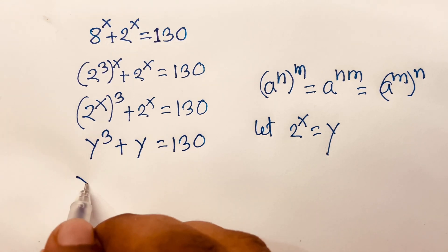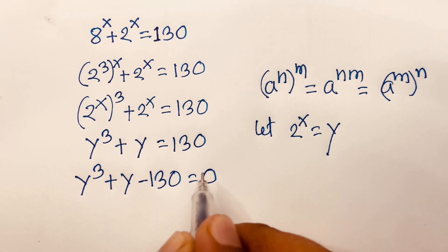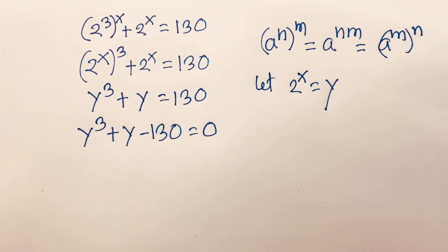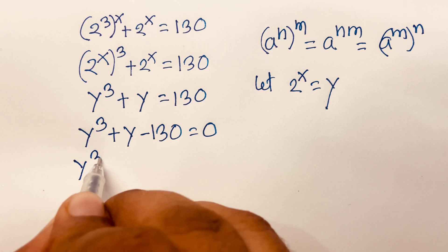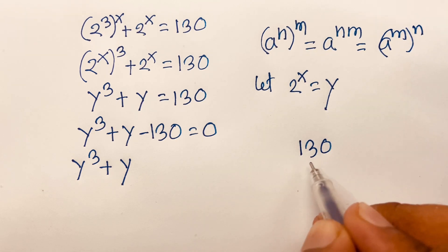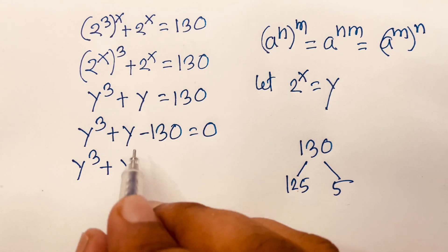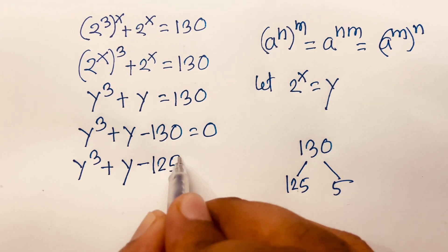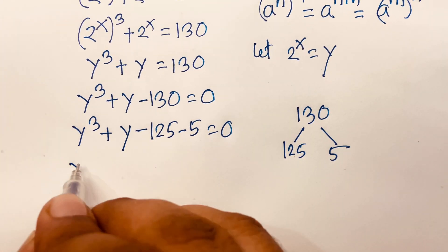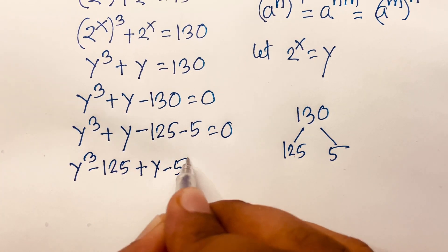Then it becomes y cubed plus y minus 130 is equal to 0. I move 130 to the left side. Now, 130 — the nearest cubic number is 125, which is 5 cubed, and here is a minus. So I can say it will be minus 125 minus 5 is equal to 0. Then: y cubed minus 125 plus y minus 5 is equal to 0.